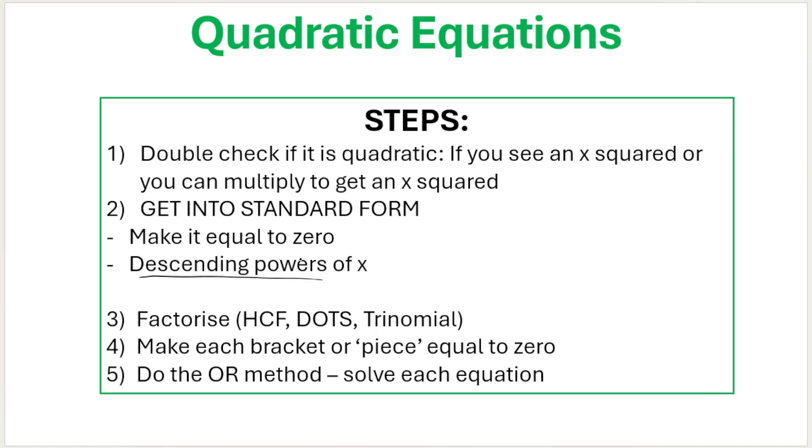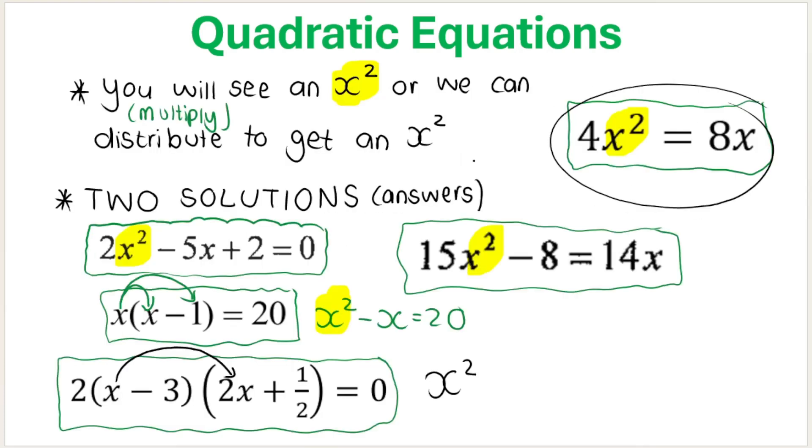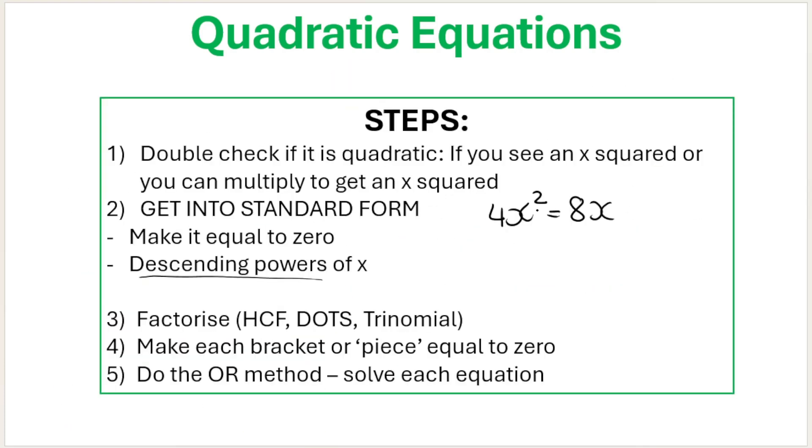Now, what does standard form mean? It means that you must make it equal to zero and you must have descending powers of x. I'll explain what this one means in a second. So, for example, if you see something like, let's take this one, for example, you can see that it is quadratic because we've got a squared term. We need to get it into standard form, make it equal to zero. So I'm going to take the 8x over. I'm going to do the inverse operation of plus 8x, which is minusing 8x. Remember, what you do on the one side, so I've subtracted 8x on the one side, you must do on the other side. What's 8x minus 8x? Zero. You've gotten rid of the 8x in simple terms. So that is standard form. Make it equal to zero.